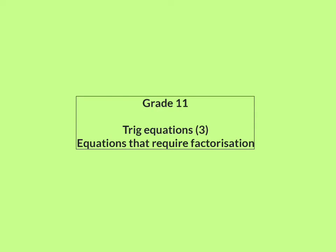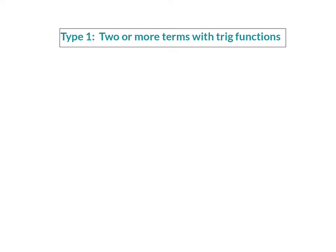In this third lesson on trig equations, we're going to have a look at equations that require factorization. In lesson one on trig equations, we learned that it is always your main aim or first step to get your trig equation into the standard form, meaning a trig function, angle, equal to a constant ratio.